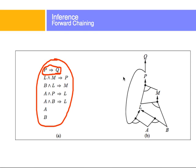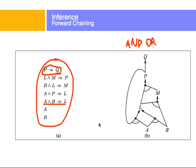I can represent the knowledge base as an and-or tree. For example, the rule L and M implies P: I have L and M together with an arc here — that means I'm putting an AND between these two literals — and then there's P. And for A and B implies L, I have A here and B here — so A and B implies L.